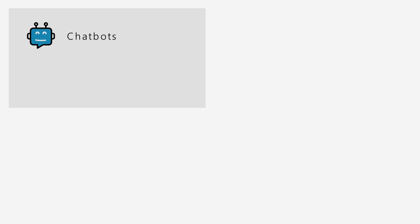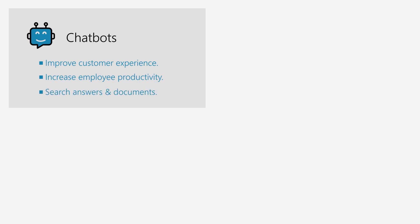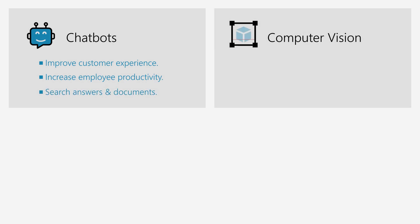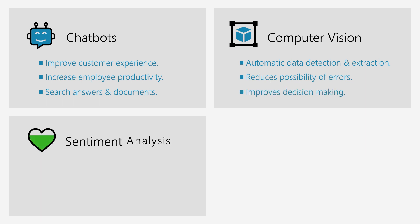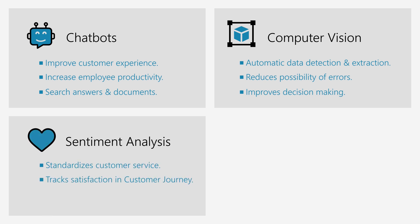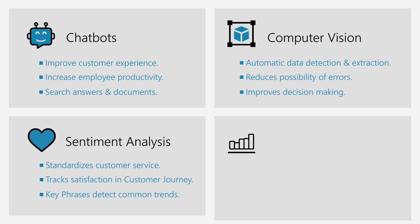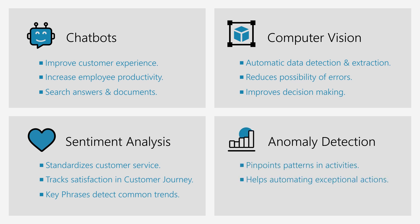The use of chatbots improves customer experience and increases employee productivity by assisting with complex tasks and searching for answers or documents. Using computer vision for complex image analysis empowers automatic data detection and extraction, reducing the possibility of errors and improving decision making. Sentiment analysis helps to standardise customer service, enables companies to track the level of satisfaction throughout the customer journey, and helps to automate decision making. It also uses key phrases to detect the most common trends or concerns among users. Anomaly detection allows you to pinpoint changes to the trend or pattern of an activity, helping to automate exceptional actions or intelligent decisions for such cases.